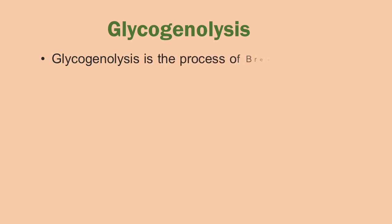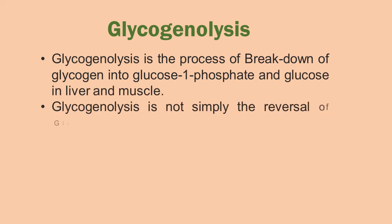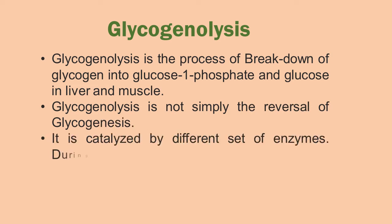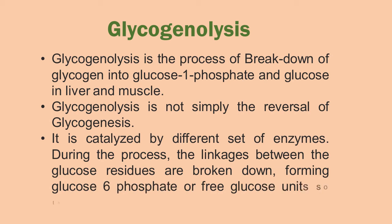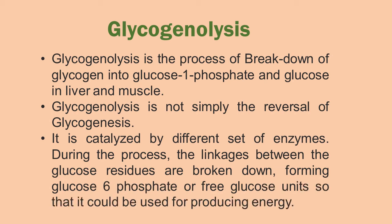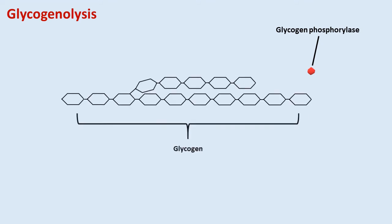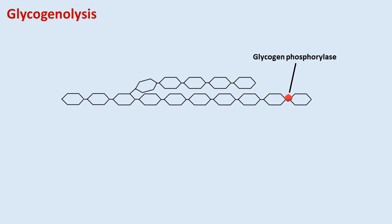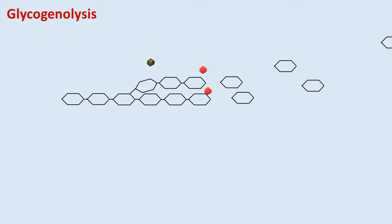Now coming to glycogen breakdown. Glycogenolysis is the process of degradation of glycogen to glucose-1-phosphate and glucose in liver and muscle cells. Remember, glycogenolysis is not the reversal of glycogenesis — it is catalyzed by a different set of enzymes. In this process, the linkages between glucose residues are broken down, forming glucose-6-phosphate or free glucose so that it can enter the glycolysis pathway for producing energy. Glycogen phosphorylase was the first allosteric enzyme to be discovered. It breaks up glycogen into glucose subunits and can act only on linear chains via alpha-1,4 glycosidic linkages. Its activity comes to a halt four residues away from an alpha-1,6 branch, which are exceedingly common in glycogen.